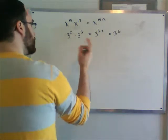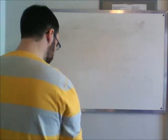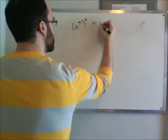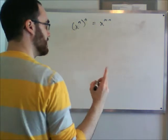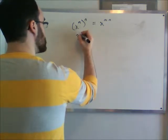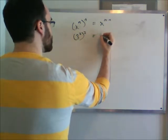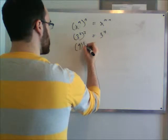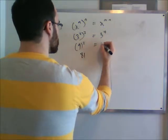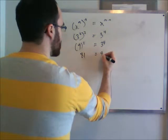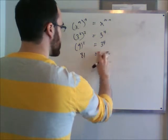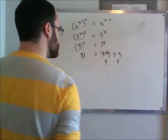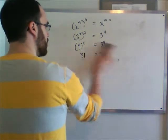The second law is to bring the exponent in when they're multiplied. If we have x to the m, all to the power of n, that equals x to the m times n — not added. For example, if you have 3 squared, squared, that equals 3 to the 4th. That's because 3 squared is 9, and 9 squared is 81. So this equals 3 to the 4th, because 3 times 3 times 3 times 3 gives us 81. That's the second law of exponents.